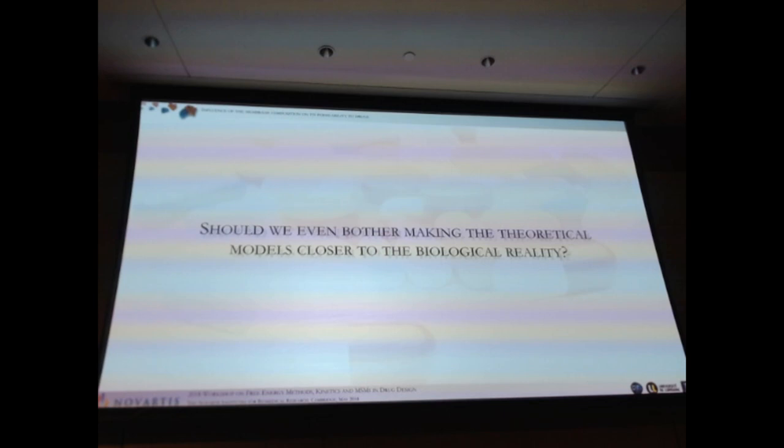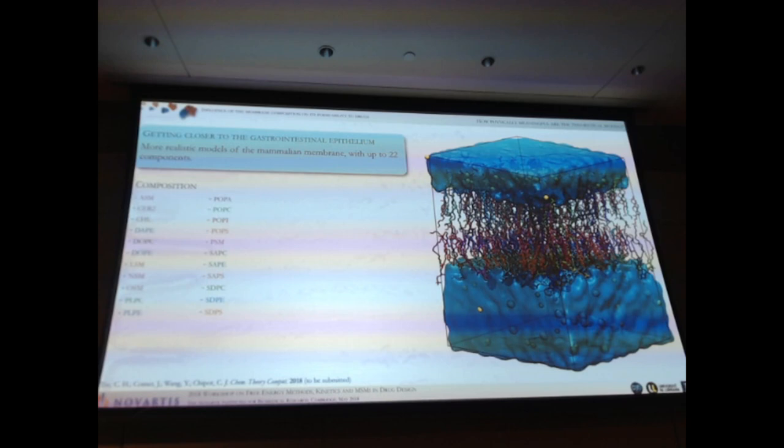So should we even bother making, at this point, should we even bother making the theoretical model closer to the biological reality? And as we've seen already, that's pretty difficult to understand how the membrane composition affects the permeability for a one- or two-component model. But if you want to be predictive, maybe we should increase the complexity of the model. So we tried that. And so we recently moved to a mammalian lipid membrane. And so the composition, we have 22 components. We have of course the usual PC. We have PE, ethanolamine. We have phosphatidyl inositol. We have sphingomyelins.